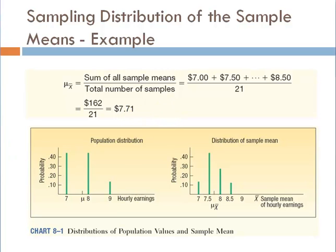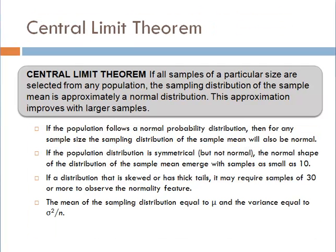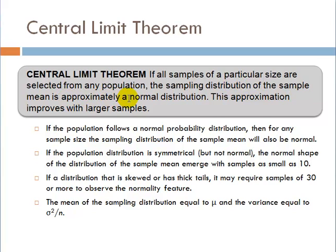Based on that example, from the sampling distribution of sample mean, we found a theory. We call it the central limit theorem. If samples of a particular size — in our last example, sample of 2 — are selected from any population, the sampling distribution of sample mean is approximately a normal distribution.